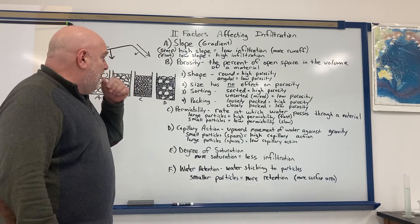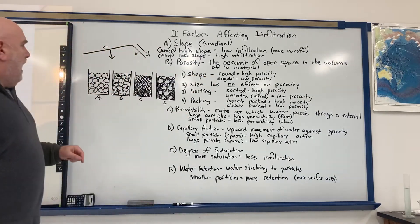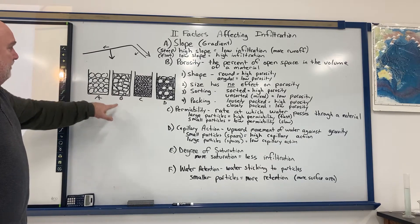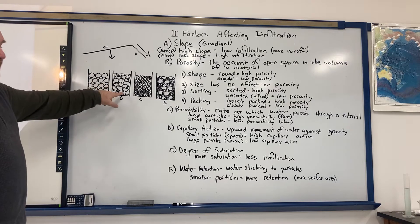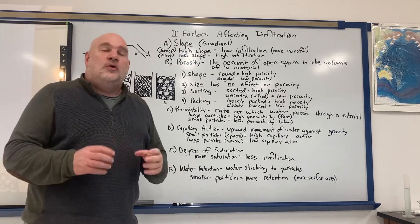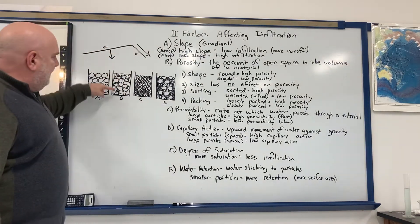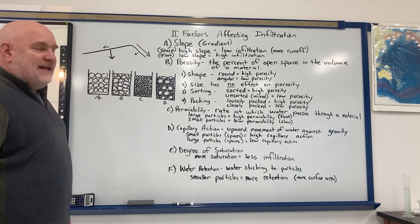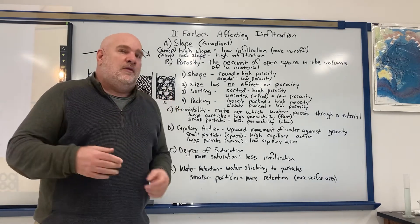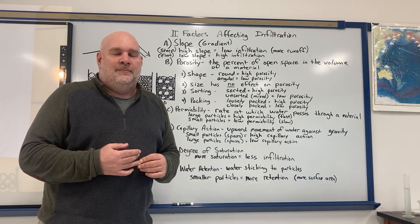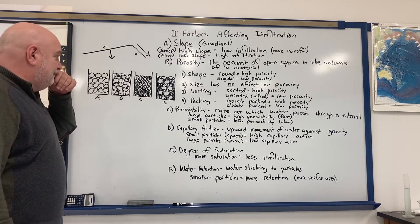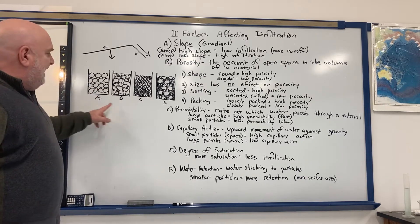One thing that affects porosity is particle shape — round compared to angular. Round particles always have gaps between them no matter how they're arranged. Angular particles tend to fit together like puzzle pieces as they settle, cutting down on empty space. So round particles have more porosity; angular particles have less porosity.